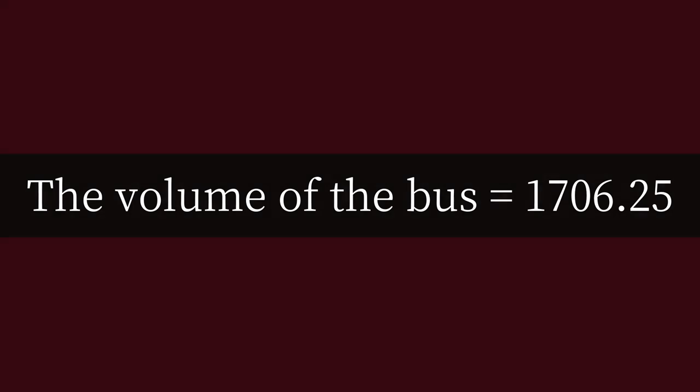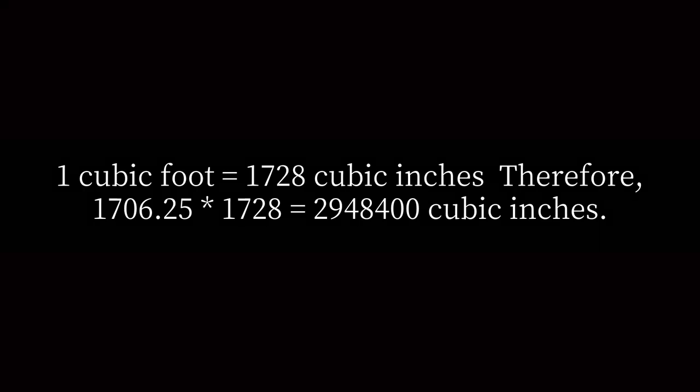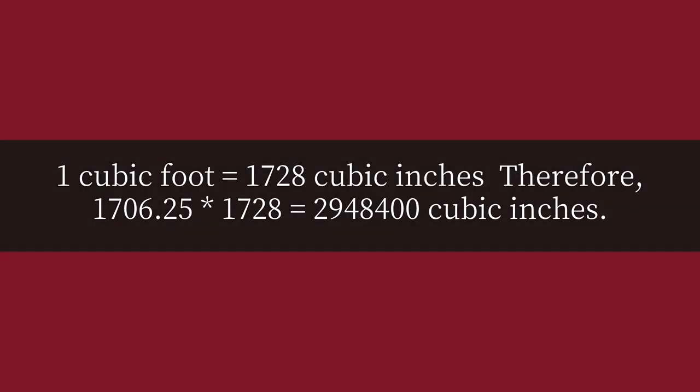The volume of the bus equals 1706.25 cubic feet. Since 1 cubic foot equals 1728 cubic inches, the total volume equals 1706.25 × 1728 = 2,948,400 cubic inches.